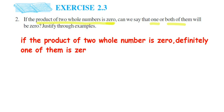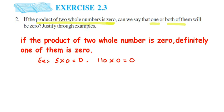Why did I say definitely? Because let us take an example — multiply any number with zero. Let us take five: five into zero is zero. Now take another number, say 110: 110 multiplied by zero is again zero. So whenever you take one number to be zero, your answer is always zero. Whether you take a four-digit, five-digit, or six-digit number, multiplying with zero always gives zero. This statement holds.